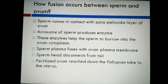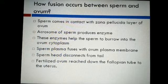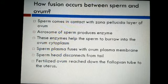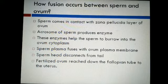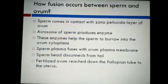How does fusion occur between sperm and ovum? First, the sperm comes in contact with the zona pellucida — the outer membrane of the ovum. Contact with the zona pellucida layer induces changes in the membrane, which block the entry of other sperm.